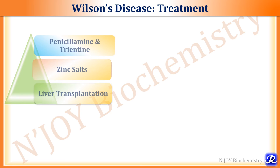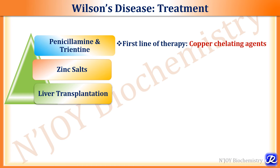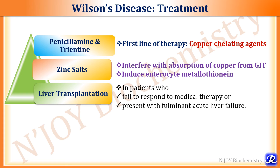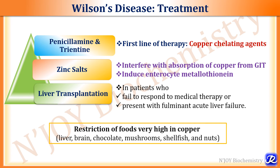Treatment of Wilson's disease includes copper chelating agents like penicillamine and trientine, zinc salts, and liver transplantation. The first line of therapy is copper chelating agents, and after de-coppering, zinc salts can be given. Zinc salts act by interfering with absorption of copper from the GIT and induce enterocyte metallothionein which sequesters excess copper. Liver transplantation is done in patients who fail to respond to medical therapy or present with fulminant acute liver failure. Dietary management includes restriction of foods high in copper like liver, brain, chocolate, mushroom, shellfish, and nuts.